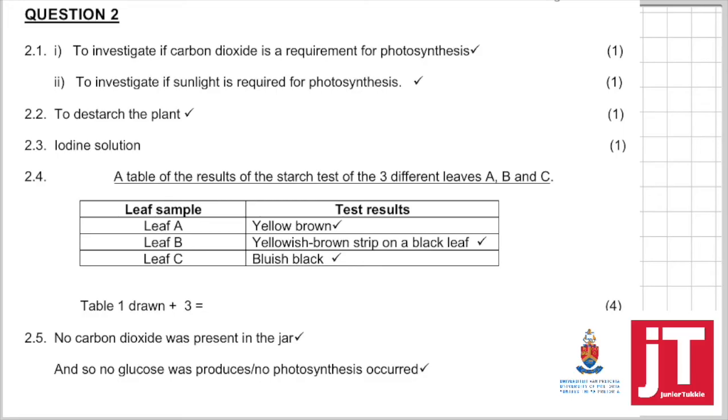And then, of course, leaf C is exposed to sunlight, and that will be a positive test, and the result will be bluish-black.